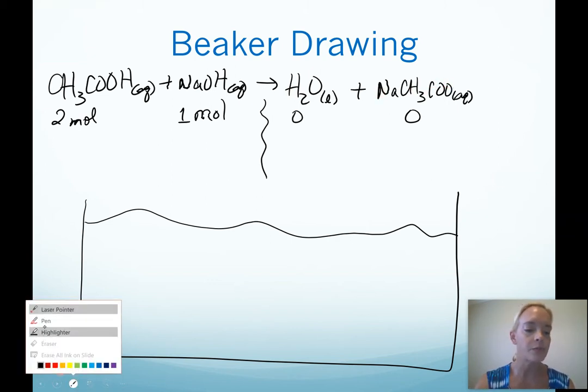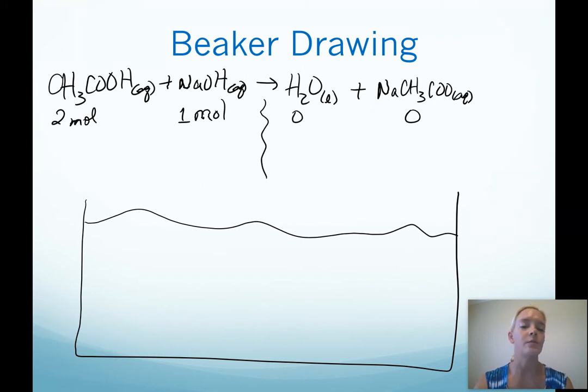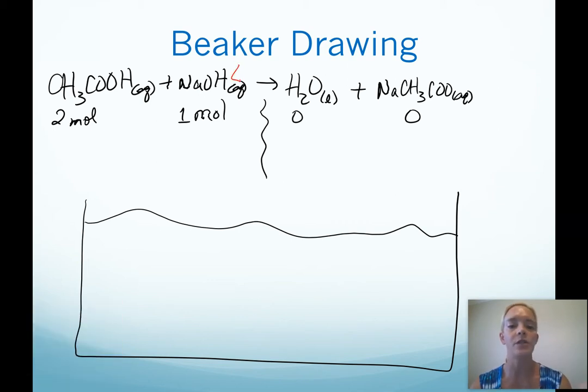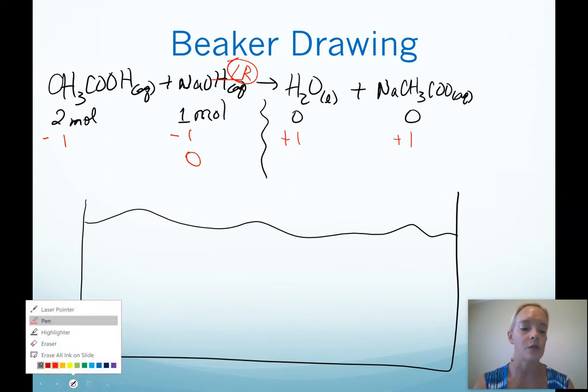Setting up a pseudo change table of sorts, realize if we start with two moles of acetic acid and one mole of sodium hydroxide, this means our limiting reagent is our sodium hydroxide. That means that we know the amount of change for everything. Reactants decrease by one, products increase by one, because sodium hydroxide needs to get used up and go to zero.